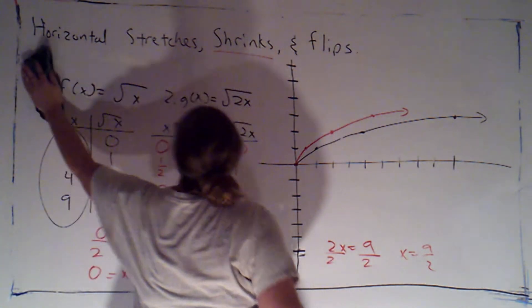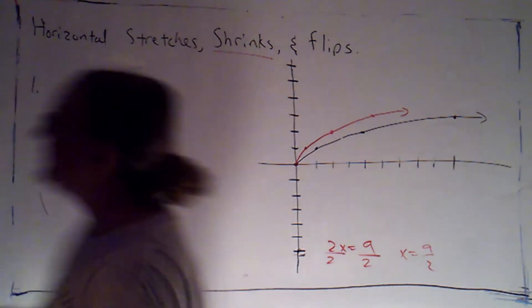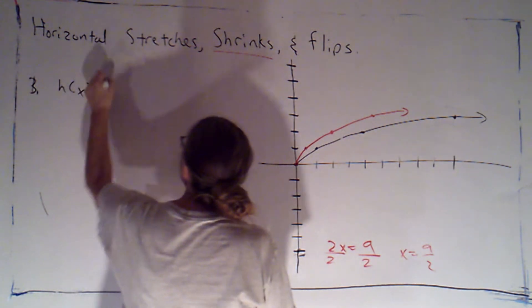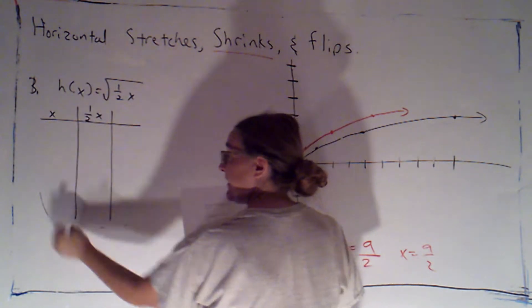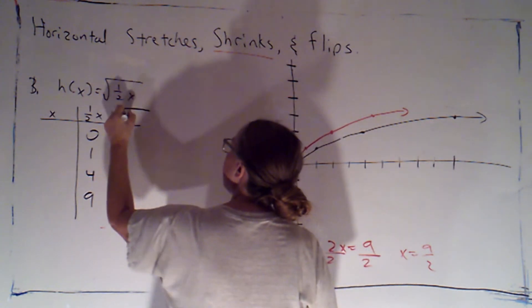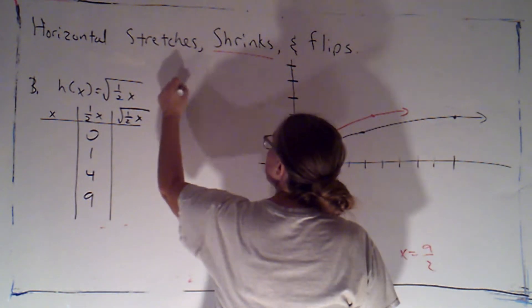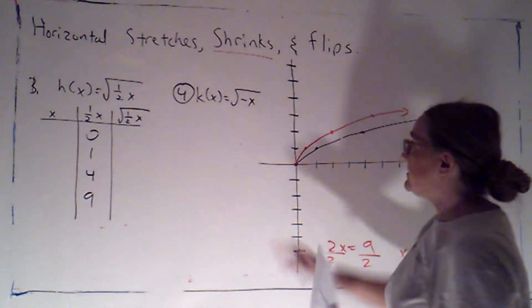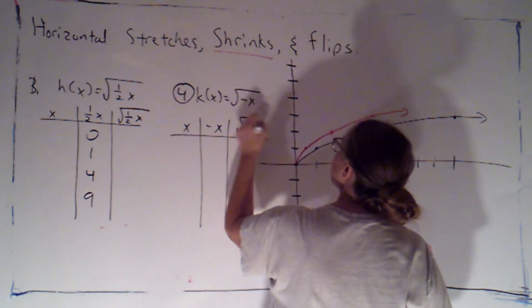All right, so I'm going to have you try problems 3 and 4. Let me just get those written on the board in case you don't have the worksheet printed out. Question 3 was h of x, which is the square root of 1 half x. So for that, I give you this table of values. We're going to set 1 half x, which is the thing we're plugging into that parent function, equal to those nice values 0, 1, 4, and 9. And then it's up to you to calculate the y values and the x values that you'll be plotting.